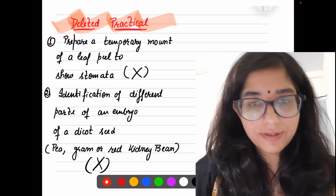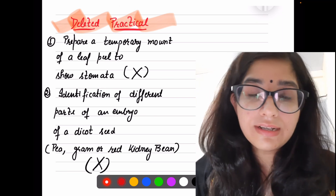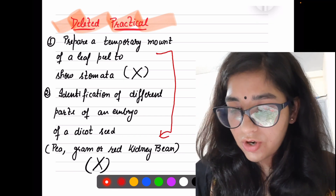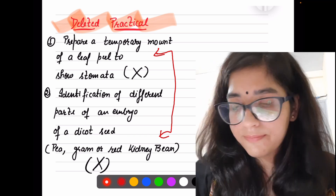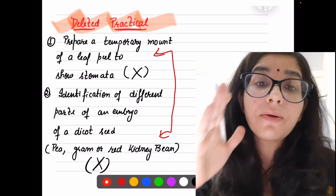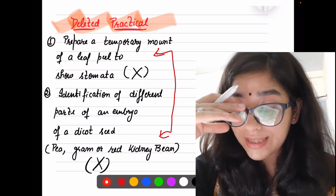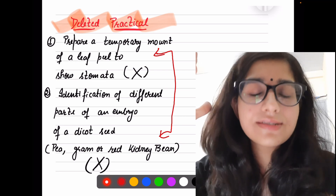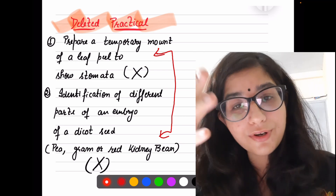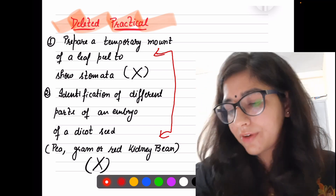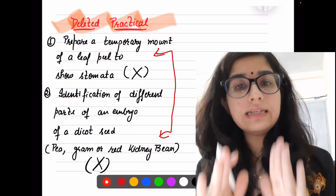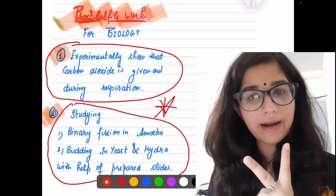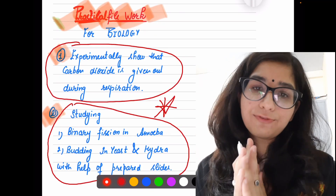Previously there were four practicals, but now only two are there. The deleted ones are: Prepare a Temporary Mount of a Leaf Peel to observe stomata, and Identification of Different Parts of Embryo — these two have been deleted. You don't need to write them in your practical file. Note: Embryo content from Dicot Seed has already been discussed in the Sexual Reproduction part of the flower, but it is not to be written in the practical file.